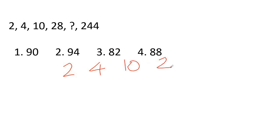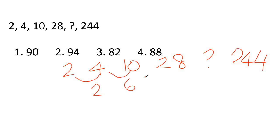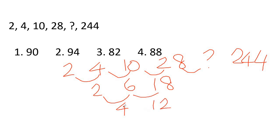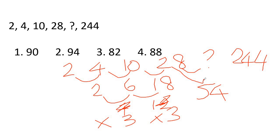Next question: 2, 4, 10, 20, ?, 244. The differences are 2, 6, 18 — multiplied by 3 each time. So the pattern difference multiplied by 3: 18 into 3 is 54. So 28 plus 54 equals 82. That's the answer.